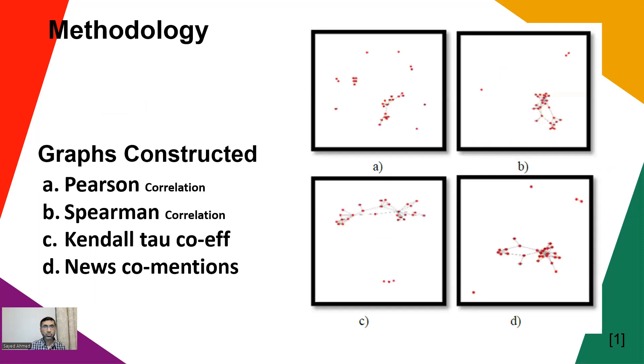The first one: each node represents a stock, and whether there is an edge or not depends on how correlated they are. They use Pearson correlation, Spearman correlation, and Kendall tau correlation. The Pearson correlation is about the linear relationship among the stocks.